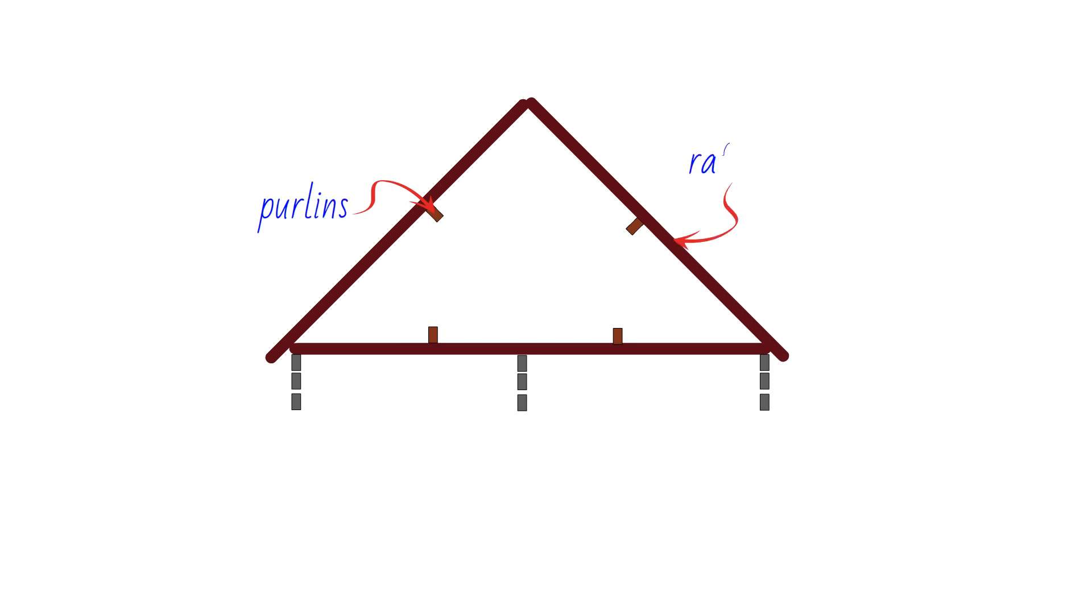The location of the purlins, if present, is a crucial factor in determining the extent of the internal area that can be achieved during the conversion.